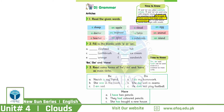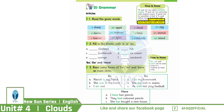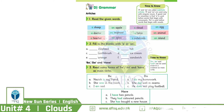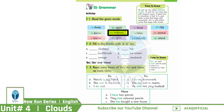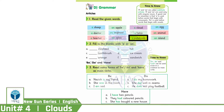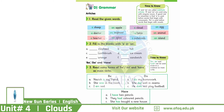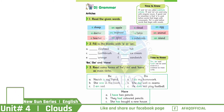A is used with common nouns, and AN is always used with nouns that start with a vowel sound. Let's practice: a sheep, an apple, a cloud, an egg, a doctor, an engineer, a table, an animal, a teacher, an igloo, a notebook, an island. Now you have to practice part two — fill in the blanks — using A or AN, and remember the rule we just discussed.